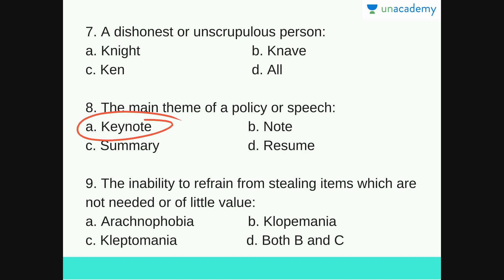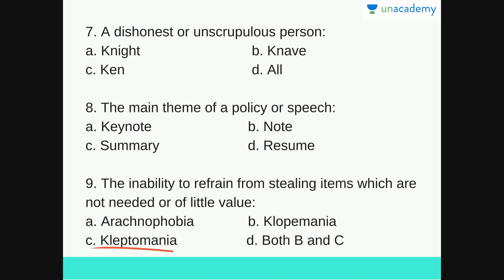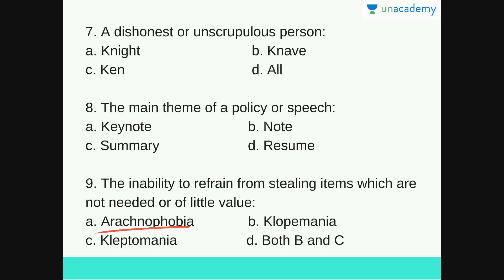Next: the inability to refrain from stealing items which are not needed or of little value — an urge that you cannot control. Options are Arachnophobia, Cloakmania, Kleptomania or both B and C. The answer is both B and C. Cloakmania and Kleptomania both mean the compulsive urge to steal items of little value. Arachnophobia is the irrational fear of spiders. Remember, Cloakmania and Kleptomania are synonyms of each other.